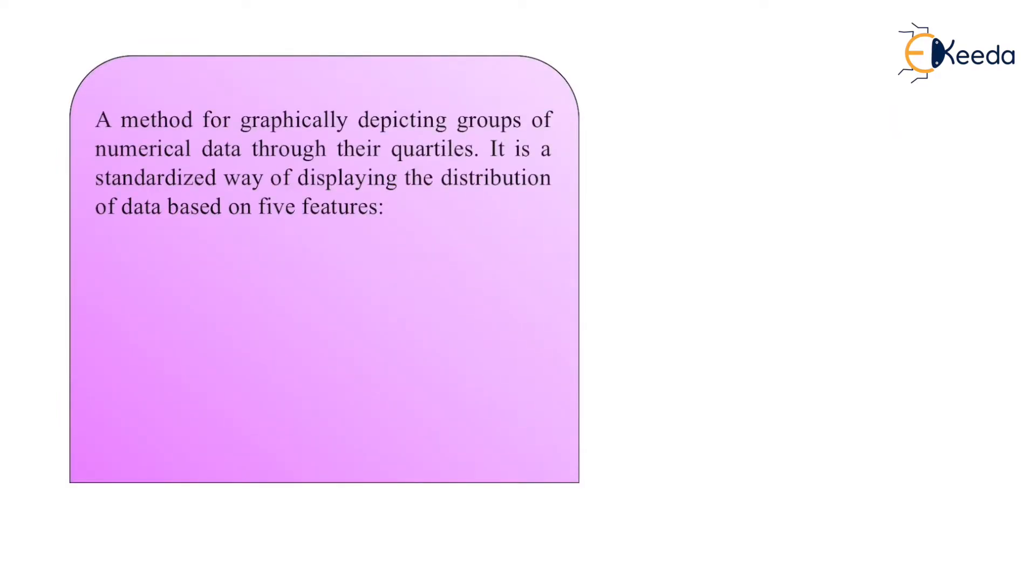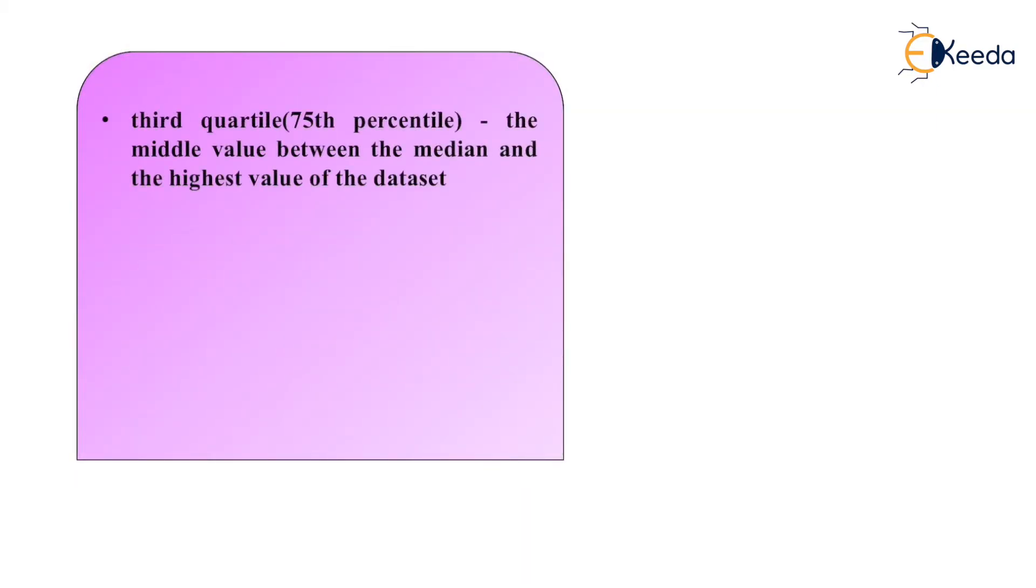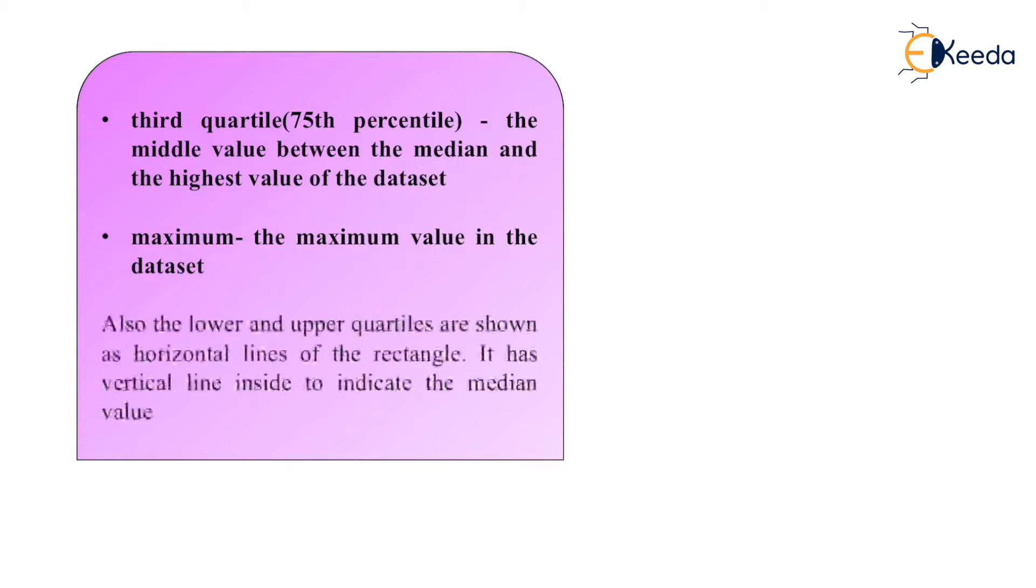A method for graphically depicting groups of numerical data through their quartiles. It is a standardized way of displaying the distribution of data based on five features: minimum, that is minimum value in the data set; first quartile, that is 25th percentile, the middle number between the smallest value and the median of the data set; the median is the middle value of the data set; the third quartile, that is 75th percentile, the middle value between the median and the highest value of the data set; then maximum, the maximum value in the data set.